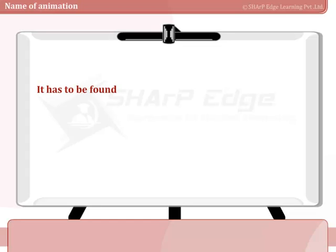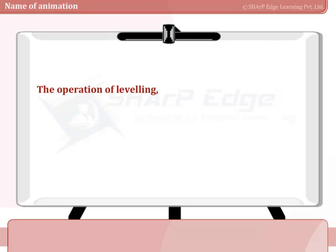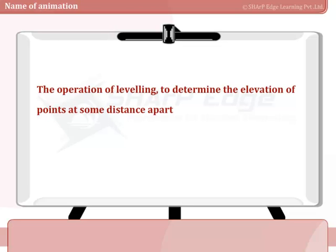It has to be found out by dividing the distance between the points into stages by turning points on which the staff is held. The operation of leveling to determine the elevation of points at some distance apart is called differential leveling.